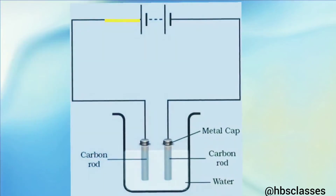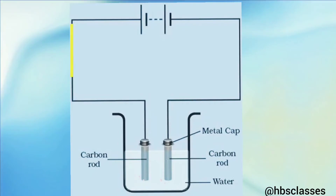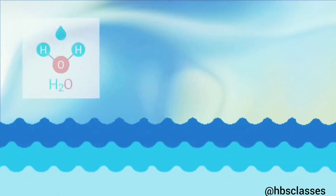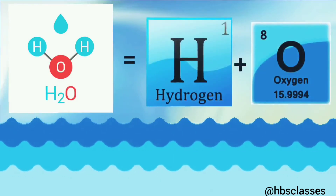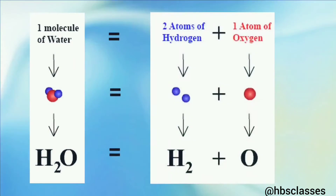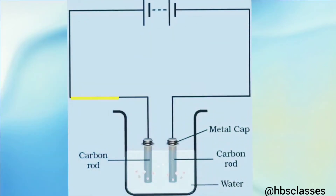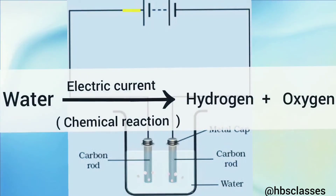For example, when electric current is passed through acidified water using carbon electrodes, a chemical reaction takes place to form hydrogen gas and oxygen gas. Water is a chemical compound, and hydrogen and oxygen are elements. In this reaction, a chemical compound — water — has been decomposed into two elements, hydrogen and oxygen, by the action of electric current. This reaction is an example of the chemical effect of electric current. The breaking up of water into hydrogen and oxygen is actually a chemical decomposition reaction caused by passing an electric current through acidified water.